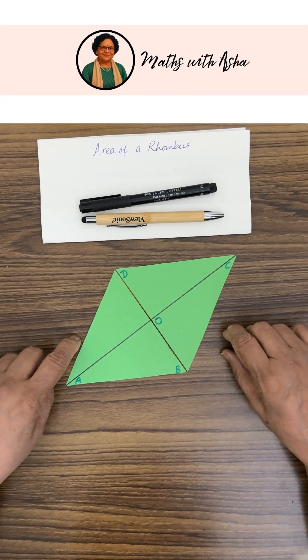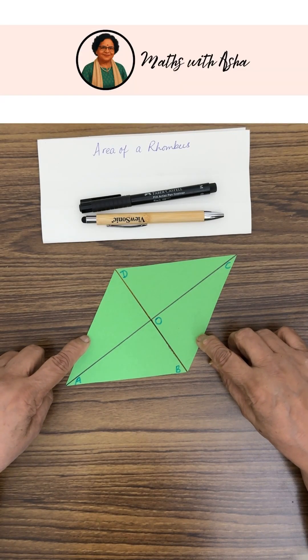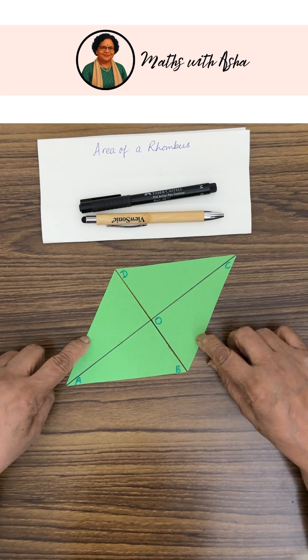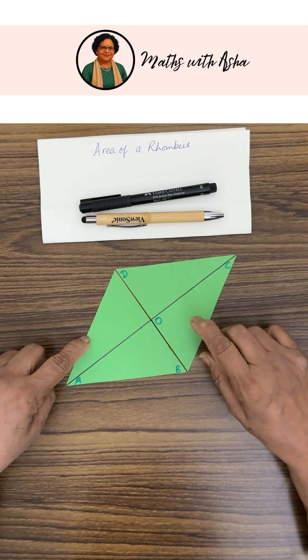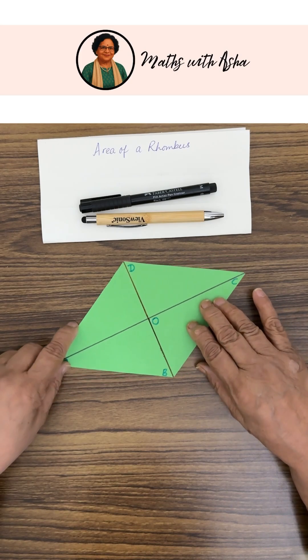We are going to find the area of a rhombus visually. A rhombus is a parallelogram with a pair of adjacent sides equal so that all the sides become equal.